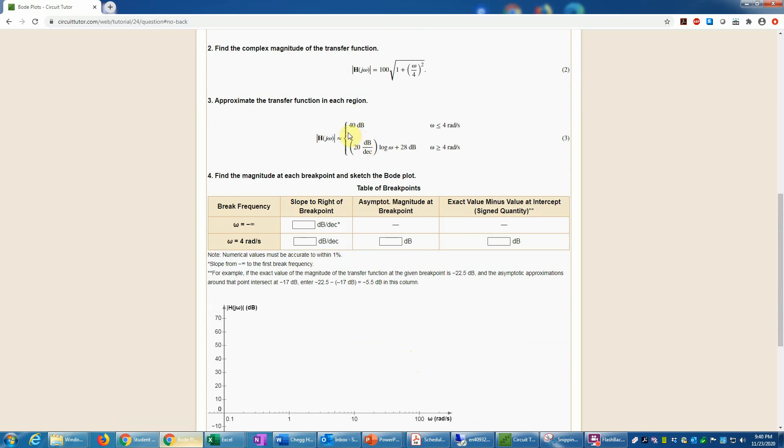Now we have our approximate expressions here for the magnitude of h of j omega for those two regions. These are the asymptotes, so these are equations of a straight line on logarithmic axes. Remember, decibels are inherently logarithmic, so even though our axis is labeled in decibels, that's still basically a logarithmic axis. Now it asks me to find the magnitude at each breakpoint and sketch the Bode plot. The slope to the right of negative infinity, well that would include this region, and there that's clearly zero slope because it has a fixed value. So we enter a zero there. After the breakpoint, we have a slope of 20 dB per decade, so I'm putting in basically that coefficient here.